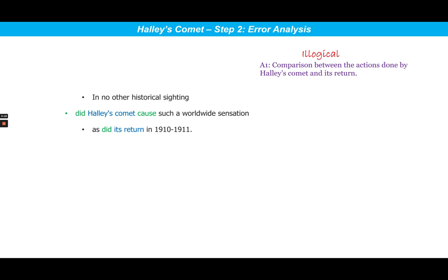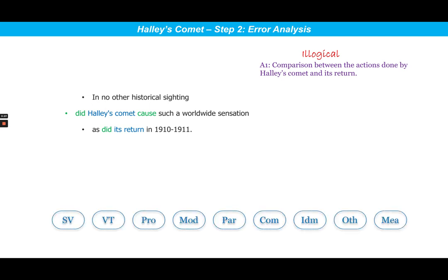So definitely we have a meaning issue in this sentence. Now that we understand the meaning very clearly, let's move on to step number two — error analysis — in which we will figure out various grammatical errors that might be present in this sentence. Very clearly, this sentence has a meaning error which is due to a comparison error: the action of Halley's Comet has been compared with the action of its return, and this comparison is not logical. So this is the only error in this sentence.